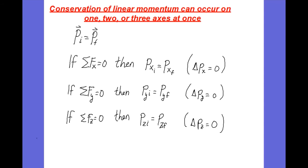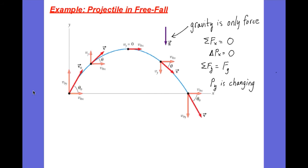Let's look at an example for a projectile in free fall. As it's flying through the air, if we neglect air resistance, gravity is the only force and it acts in the vertical direction. So there are no forces in the X direction. Earlier we said that means the velocity in X doesn't change, and we see at all these different time points throughout the trajectory, the velocity in X is equal to what it was at the beginning.